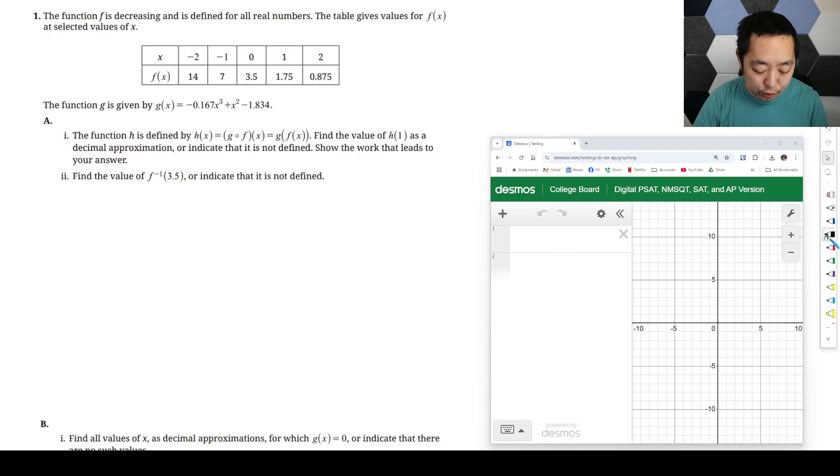We're going to take a look at the first FRQ in the 2025 AP pre-calculus exam. So we have the function f is decreasing and defined for all real numbers. The table gives values for f of x. The function g is given by this. The function h is defined as g of f of x. Find the value of h of 1 as a decimal approximation or indicate that is not defined. Show the work that leads to your answer.